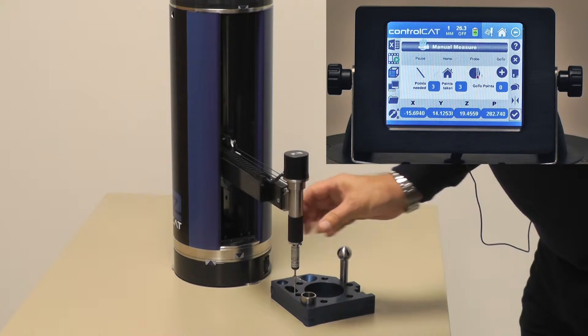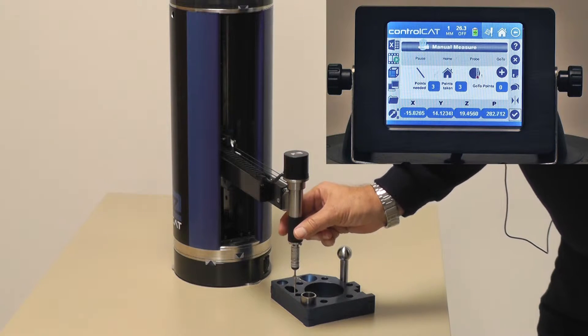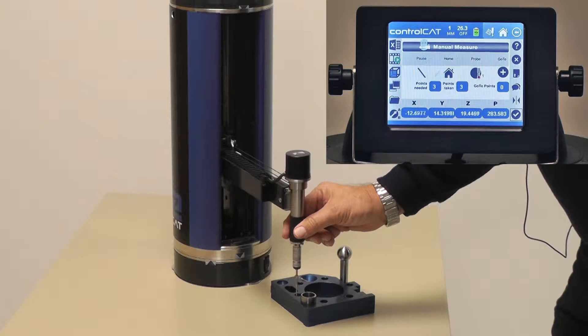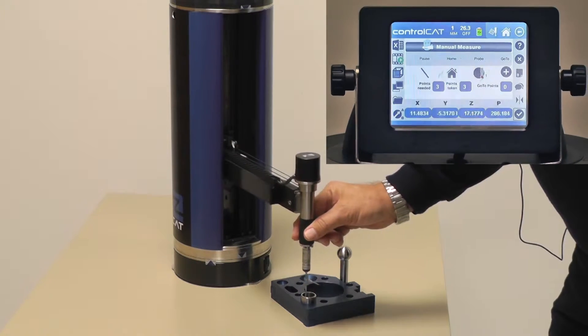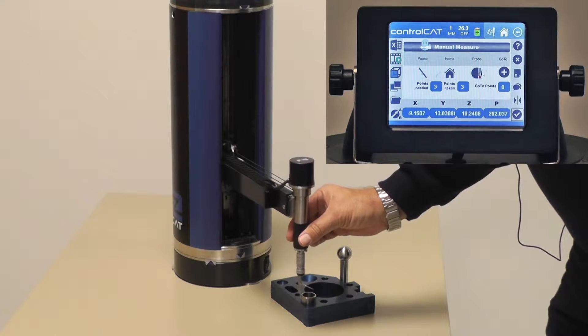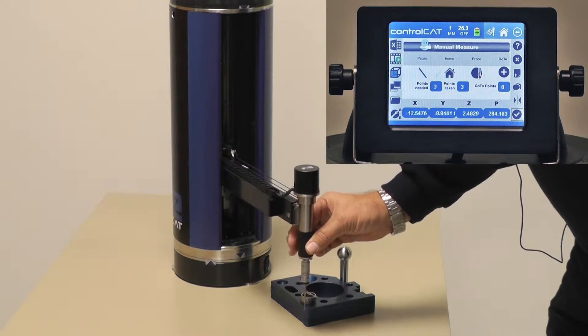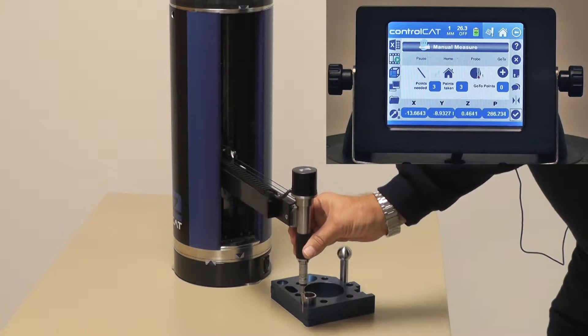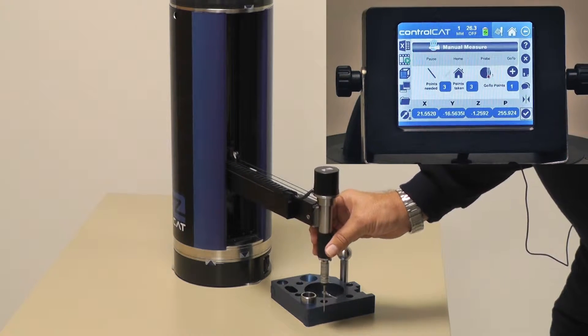So I've taken three points on a line, but I got to be very careful here because from the third point to the fourth point, it's going to try and go in a straight line if I don't give it a go-to. We don't want to crash the Z-CAT any more than is normal. So I'm going to give it a go-to out here and maybe another go-to here.